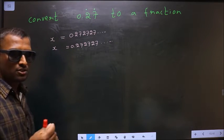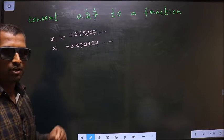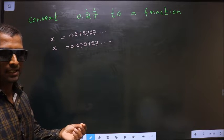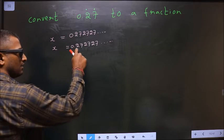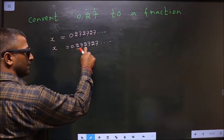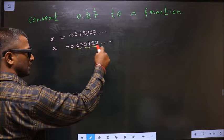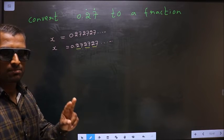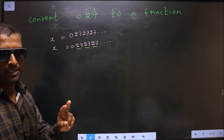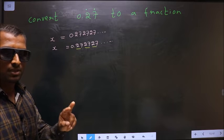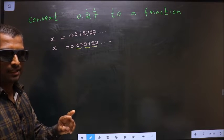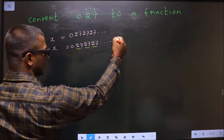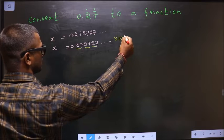Now you should check how many numbers are being repeated. In this case, 272727 are repeating, which means two numbers are being repeated. So whenever two numbers are repeating, you should multiply by 100 on both sides.